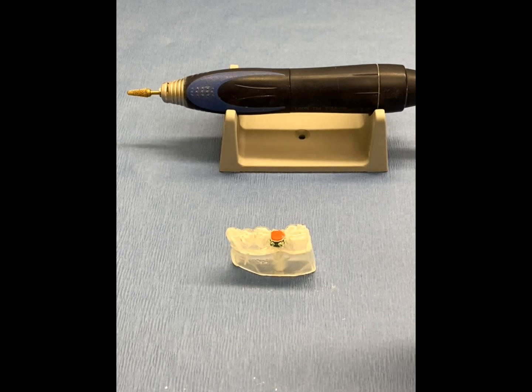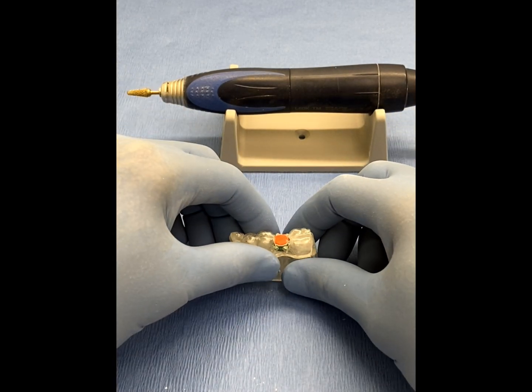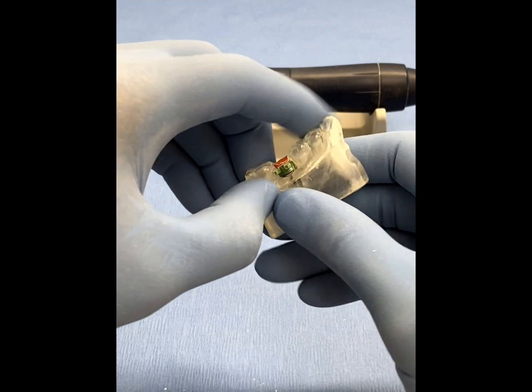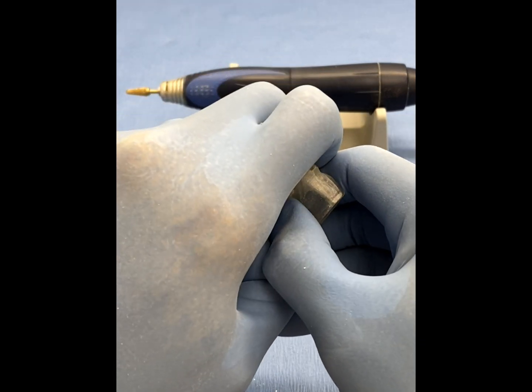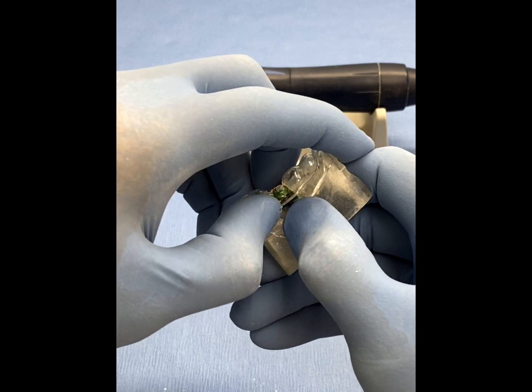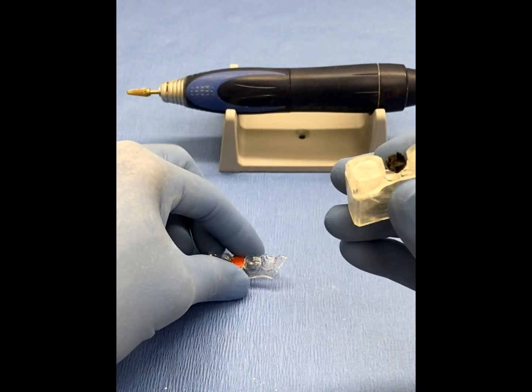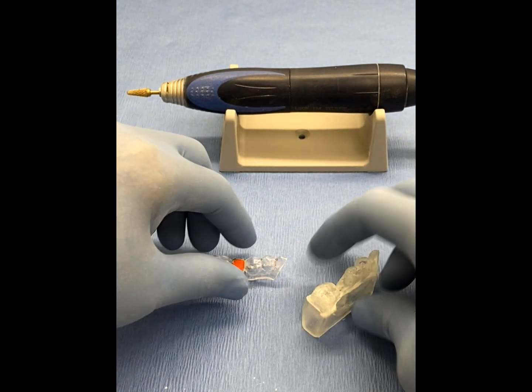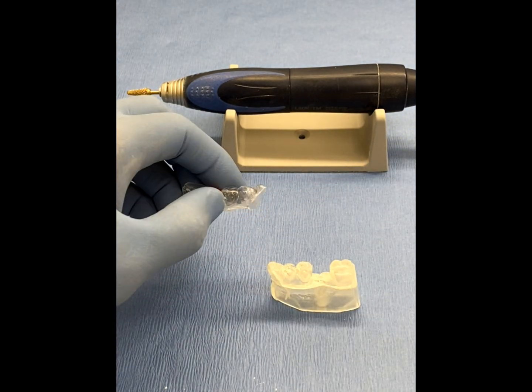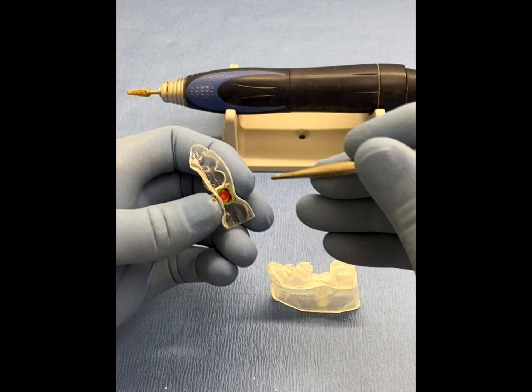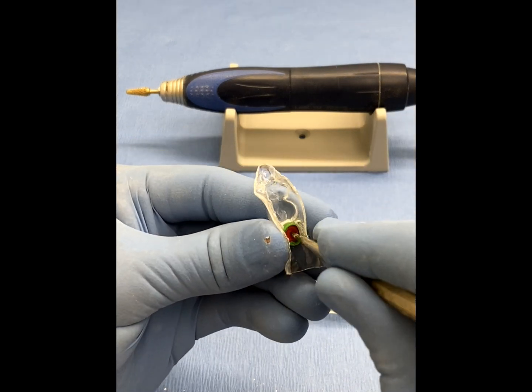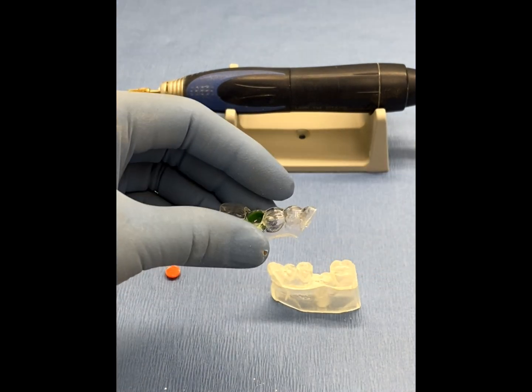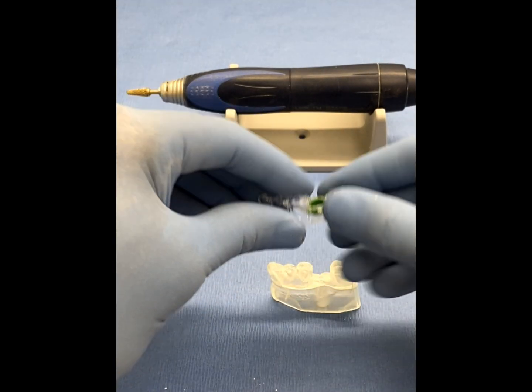The surgical guide should then be removed from the model, taking care not to deform the plastic during the removal process. The locator pin should be removed at this time from either the surgical guide or surgical model in order to gain access to the protection cap. The protection cap can now be removed with light pressure by inserting a narrow dental instrument or the shaft of a lab burr or disc through the underside of the GRS surgical ring, which will allow the protection cap to simply pop out.